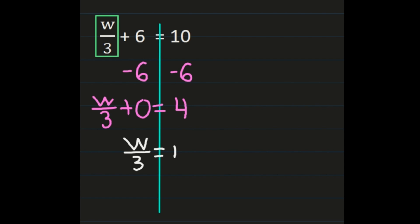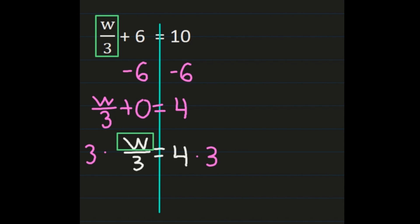Now we're ready to box w and isolate the variable. We have w divided by 3, so to get w by itself we multiply. We multiply both sides by 3. On the left the 3s simplify out, leaving just w. On the right, 4 times 3 is 12. So w equals 12.